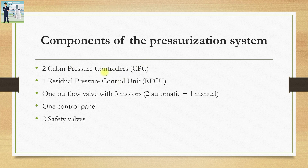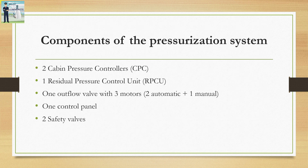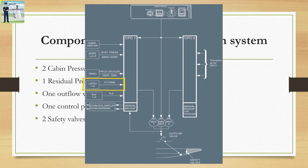We have two cabin pressure controllers located at the forward section of the avionics bay. These are two exactly same programmed computers whose job is to signal the motors at the outflow valves as to how much they should open in different flight phases. These cabin pressure controllers receive signals from the emergency ram air inlet flap, the three ADIRSs, the FMGC, the landing gear control and interface unit, and the engine interface unit, after which they generate signals to the ECAM system display and generate ECAM warnings under emergency scenarios.